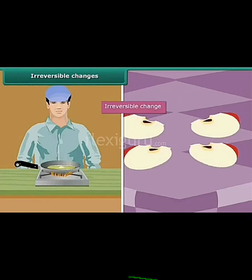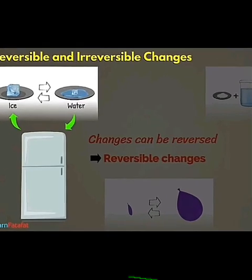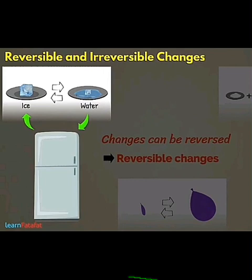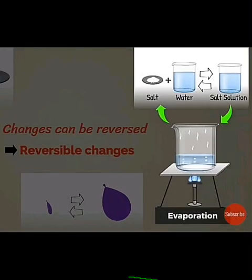Reversible and irreversible changes recap: When ice goes out of the freezer, it melts and converts into water, and if you freeze the water again, it converts back into ice — that is reversible. We mix salt into water and it becomes a salt solution. If we heat the salt solution, the water will evaporate and the salt will remain in the container — salt and water are separated. Again, this is a reversible change.